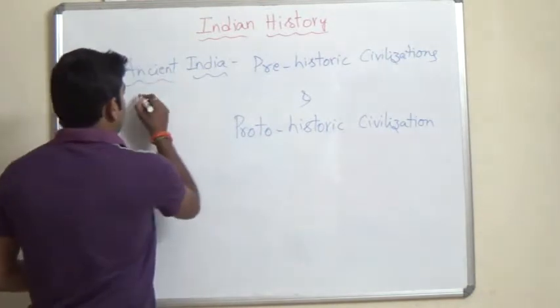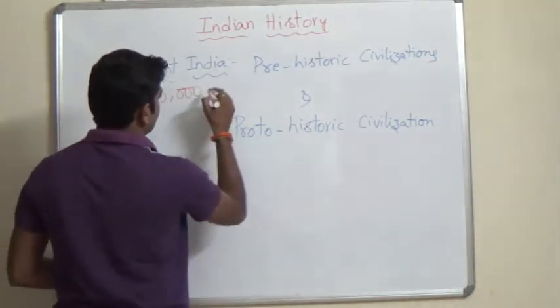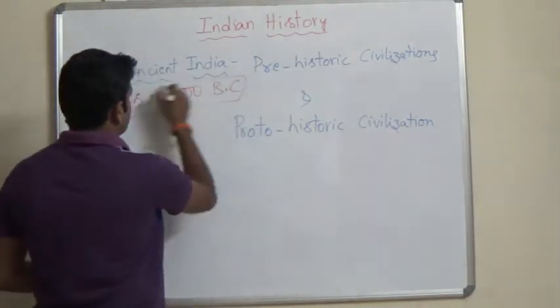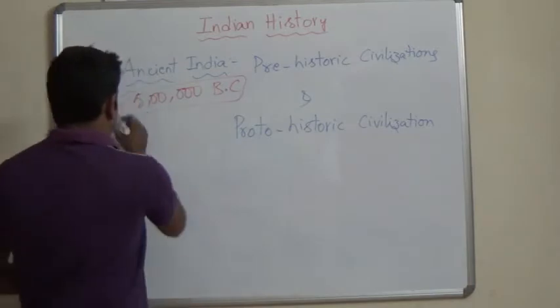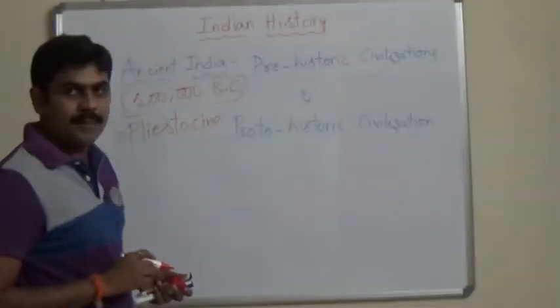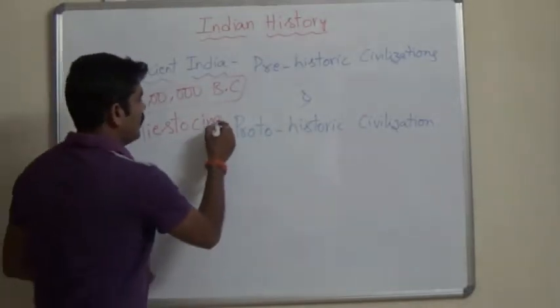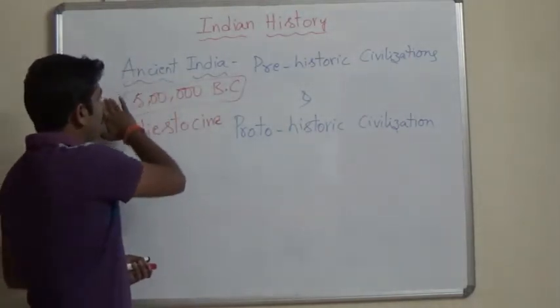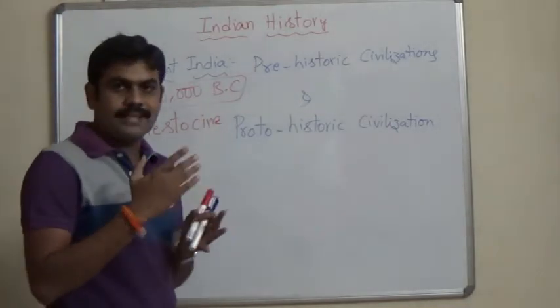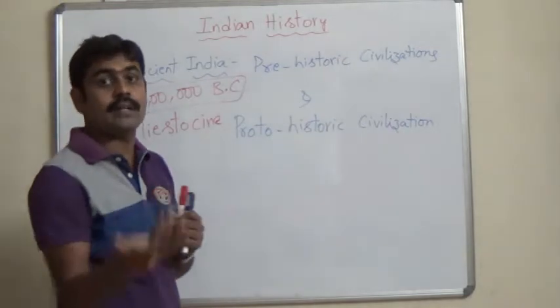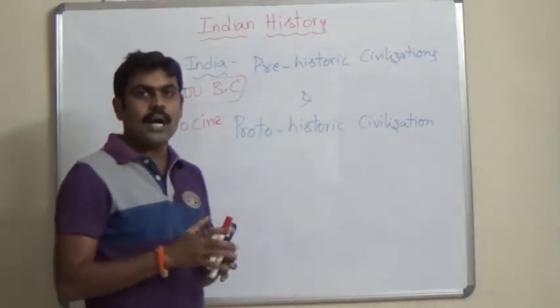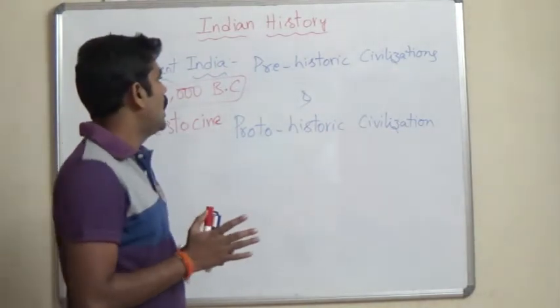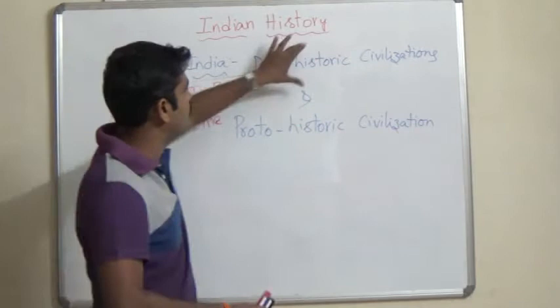The study of prehistoric civilizations begins from 50,000,000 BC onwards, which we call the Pleistocene age. From the beginning — that is from 50,000,000 BC onwards — we go by excavations, and from those excavations, historians proposed theories. Among those, what seemed to be suitable and what is believed — in that way we study the prehistoric civilizations.